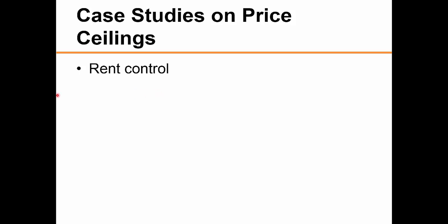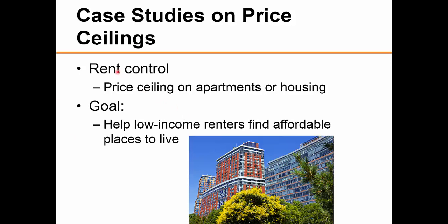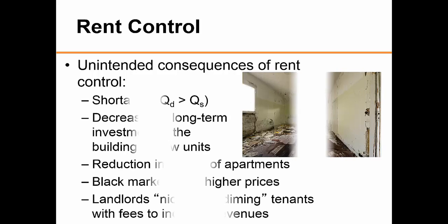Often the government intervenes in the market with the goal of helping a specific group, but we usually see unintended consequences. An example is rent control, where government sets a price ceiling on apartments or housing to help low-income renters find affordable places to live. Shortages are an obvious result. When the price is kept artificially below equilibrium, quantity demanded always exceeds quantity supplied. Long-term shortages may be even worse — an investor expecting a return of $1,000 per unit per month may decide not to build an apartment complex if rent control limits the return to only $500 per month, which exacerbates the shortage in the long run.